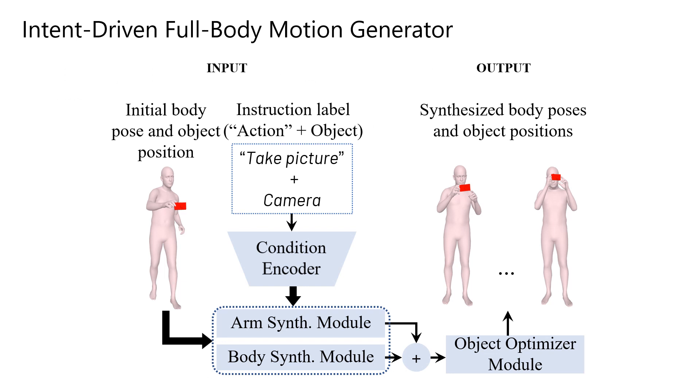We accomplish this using our intent-driven full body motion generator, which is based on a conditional variational autoencoder architecture. It takes in an initial body pose, an object position, and an instruction label specifying the type of object and the action to be performed, and outputs a synthesized sequence of body poses and object positions corresponding to that action.